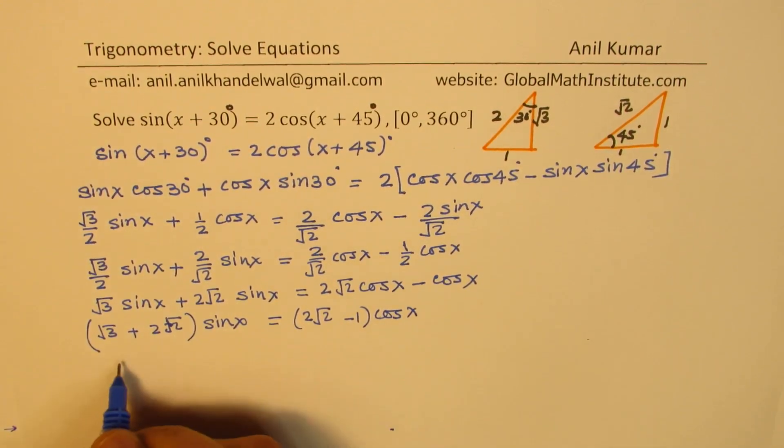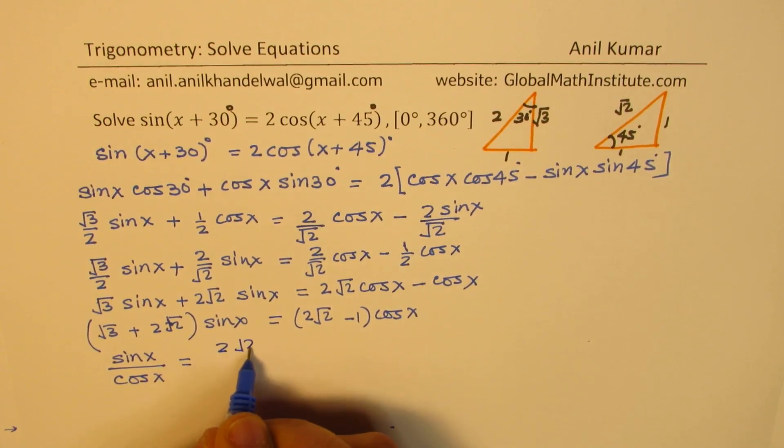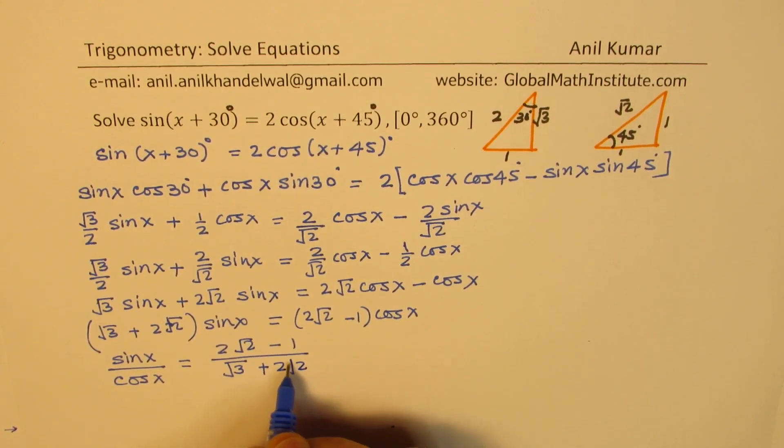So dividing, we can write sin x over cos x equals to (2√2 - 1) over (√3 + 2√2). Perfect.